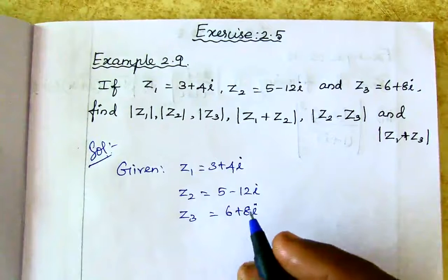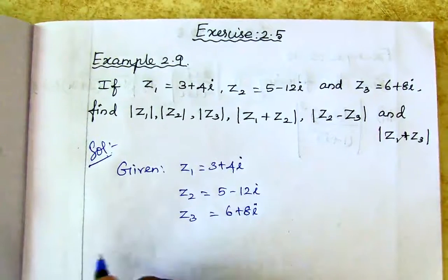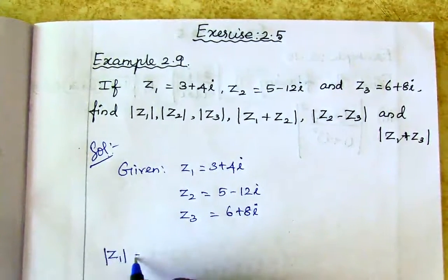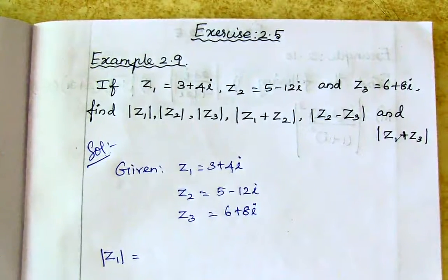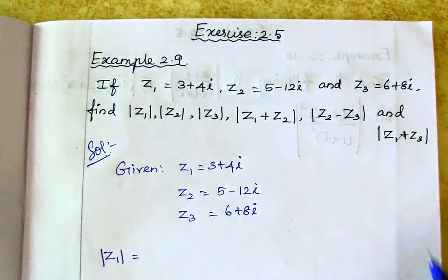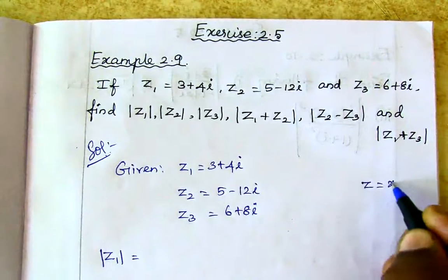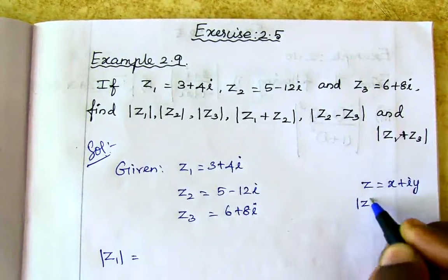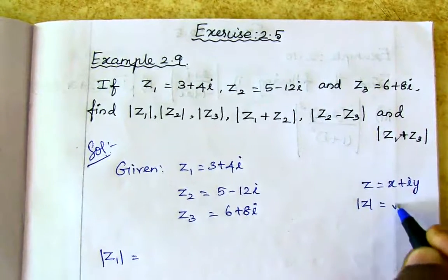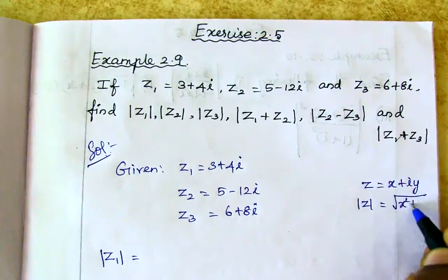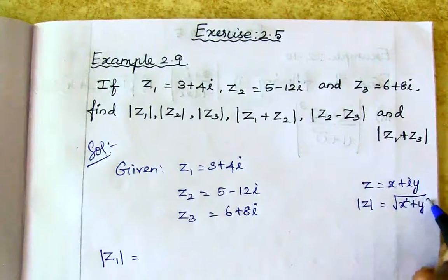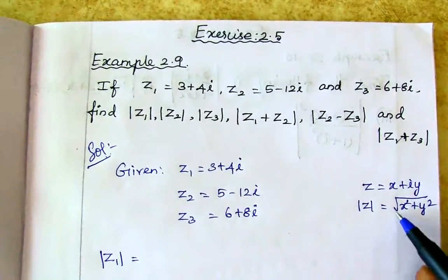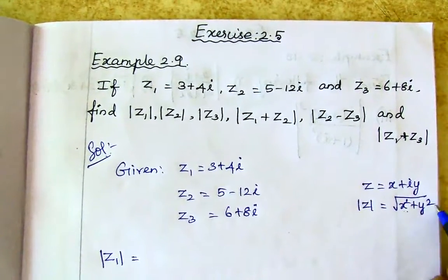So first we are going to find the modulus of z1. We are going to use the modulus formula. Modulus of z is equal to x plus iy, and modulus of z is equal to square root of x squared plus y squared.